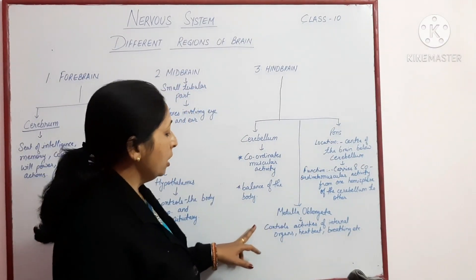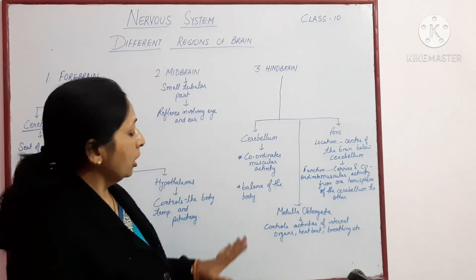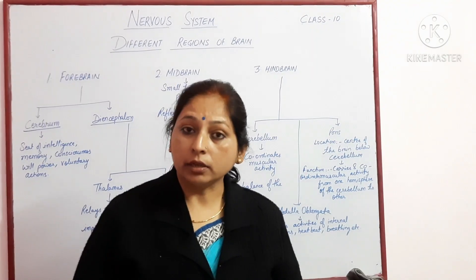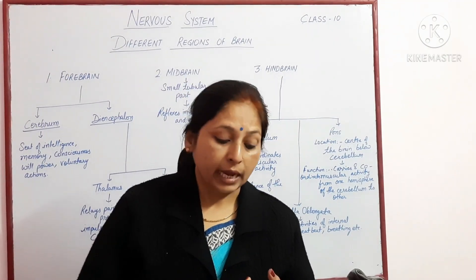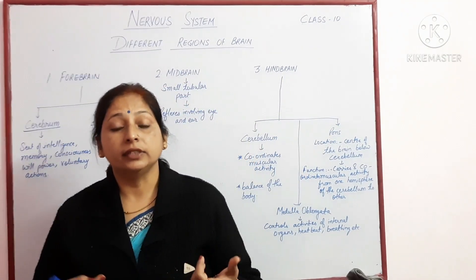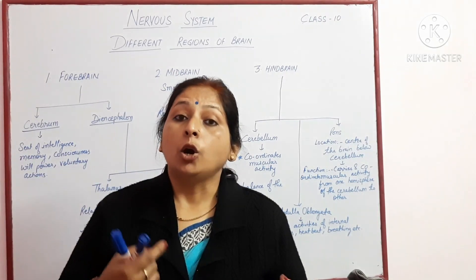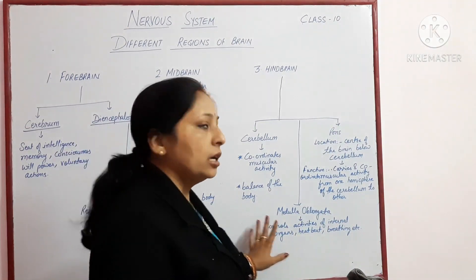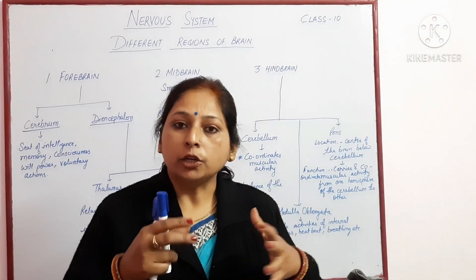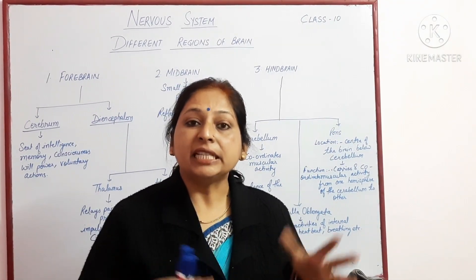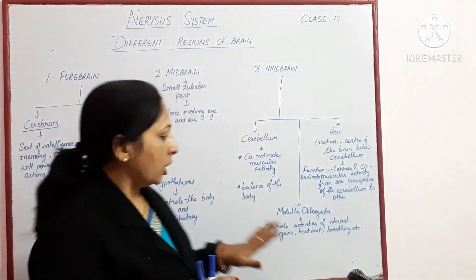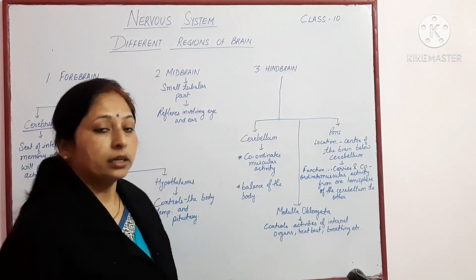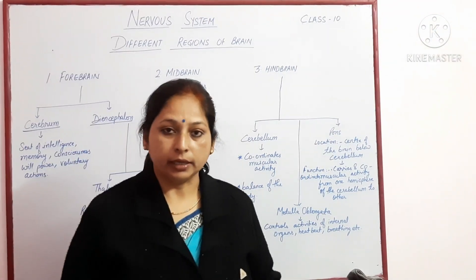The third part of hindbrain is medulla oblongata. Medulla oblongata controls the activity of internal organs — activities like heartbeat and breathing. It is like a home minister: it controls all the activity inside the house, meaning all the internal activities are controlled by medulla oblongata.